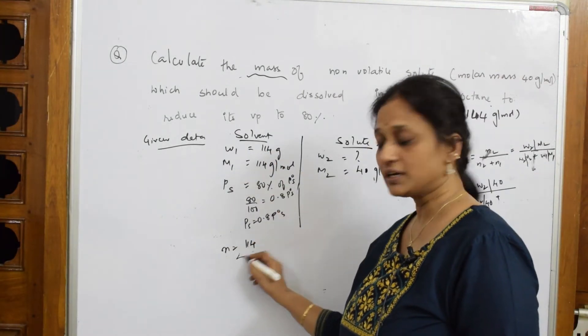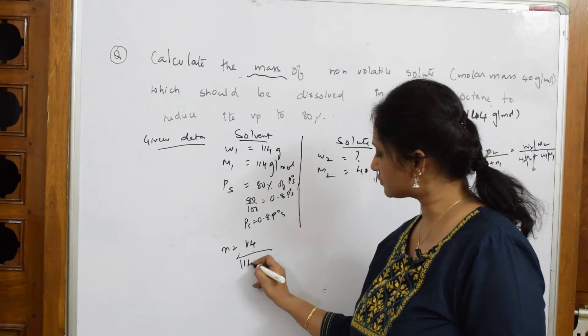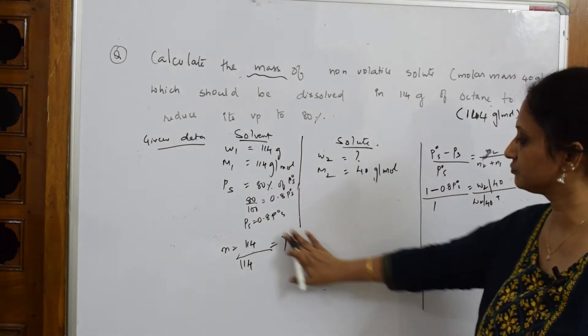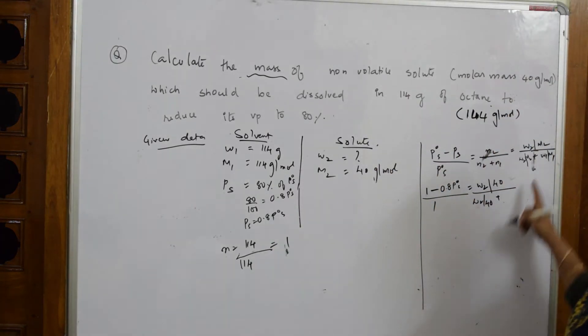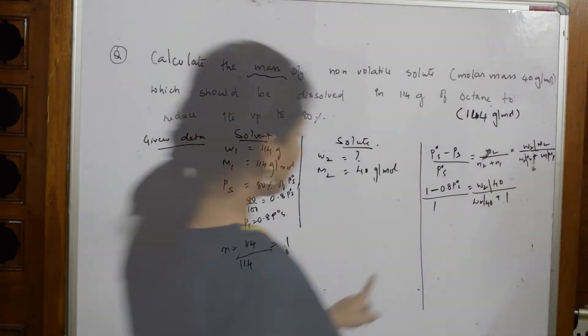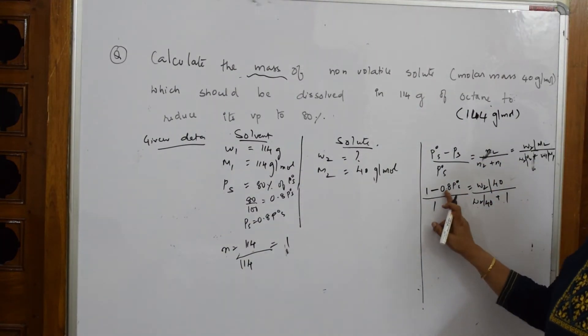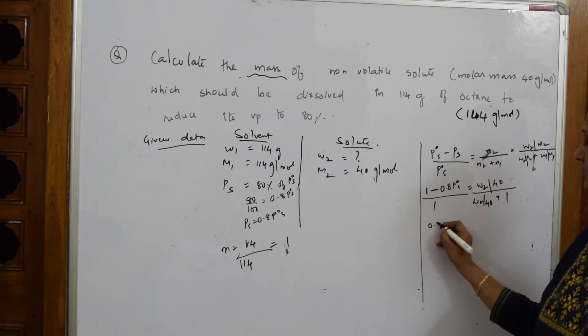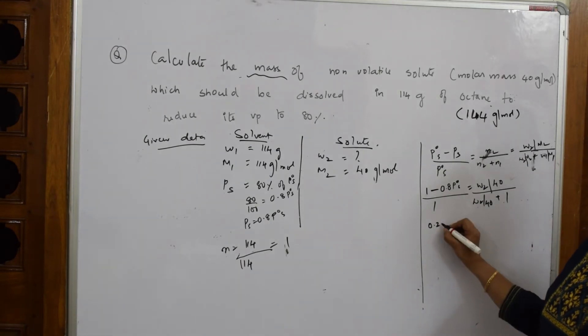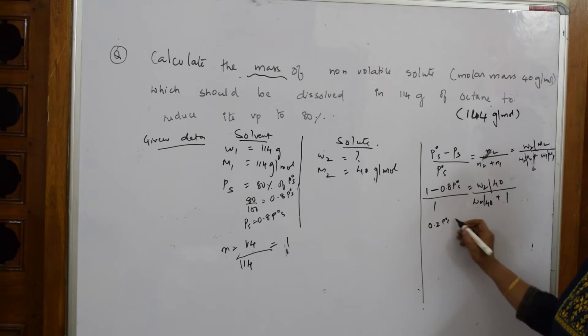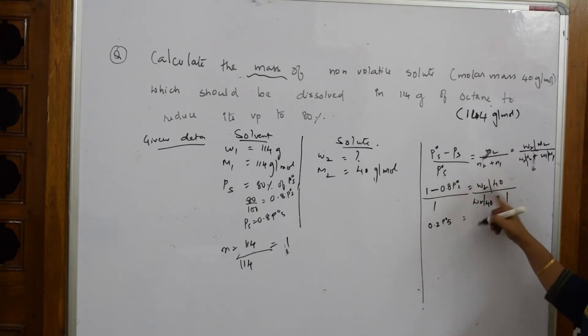Since 114/114 = 1, this becomes 1 - 0.8, which is 0.2, equals w2/(w2 + 40). Taking the LCM and cross-multiplying: 0.2(w2 + 40) = w2.